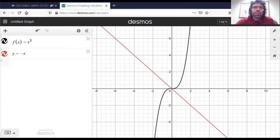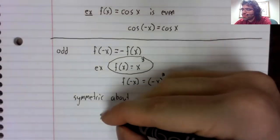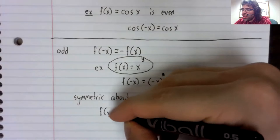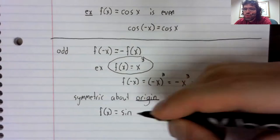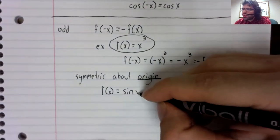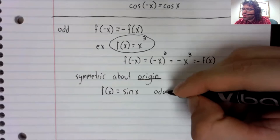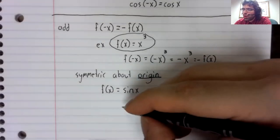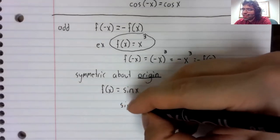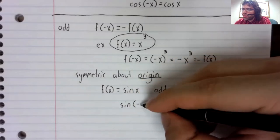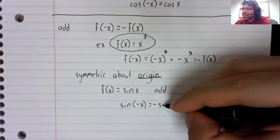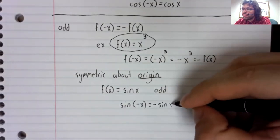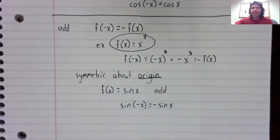And for the purposes of this class, the really important example to know is that the sine of x is odd. That is to say the sine of negative x is negative the sine of x.